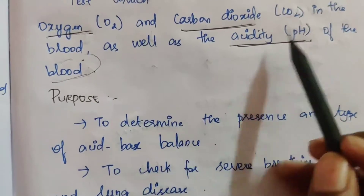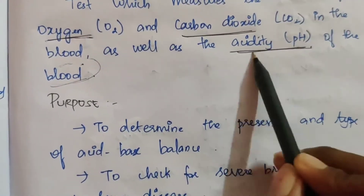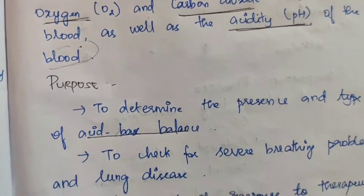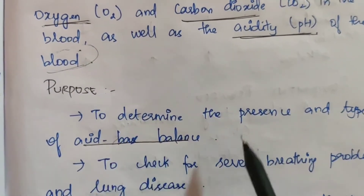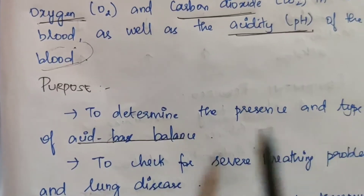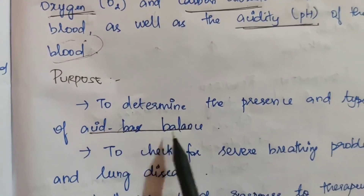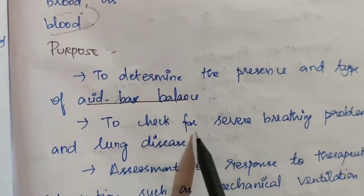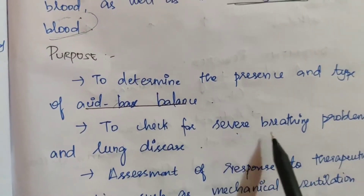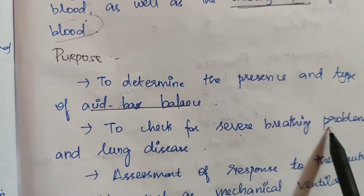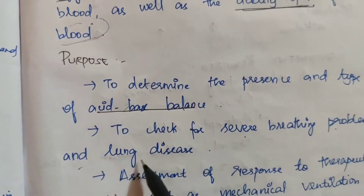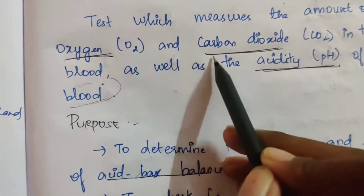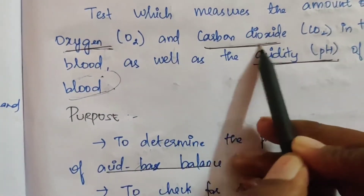The purposes include: first, acidity — to determine the presence and type of acid-base balance. Second, to check for severe breathing problems and lung disease, involving oxygen and carbon dioxide levels.